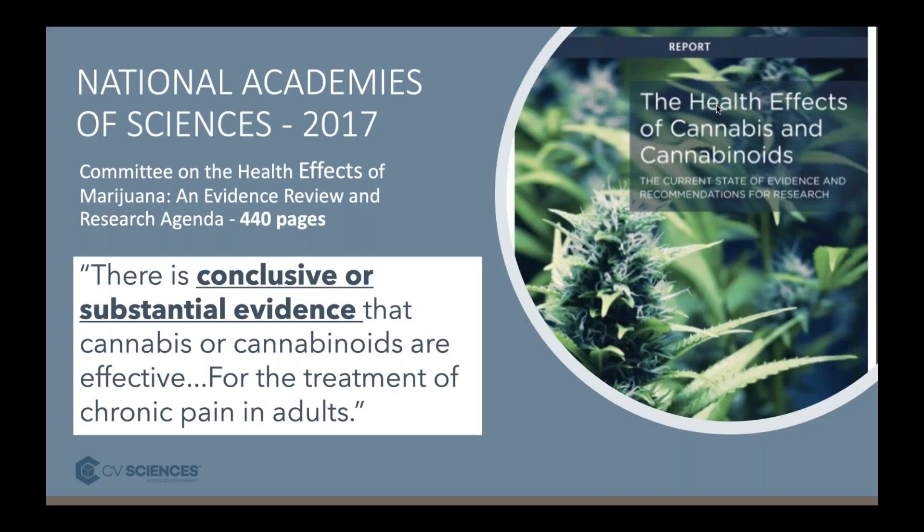Fast forward to 2017: the National Academies of Sciences, Health and Engineering commissioned a report. They put together an independent panel of experts and asked them to systematically evaluate all of the scientific literature. They produced a 444-page report and determined that there was conclusive or substantial evidence that cannabis or cannabinoids are effective for the treatment of chronic pain in adults. As a tip: when you see the word cannabis in research, it typically refers to plant material that is smoked or vaporized, and when you see cannabinoids, it typically refers to individual cannabinoids — either synthetic or extracted and administered orally — so the effects can differ due to route of administration.